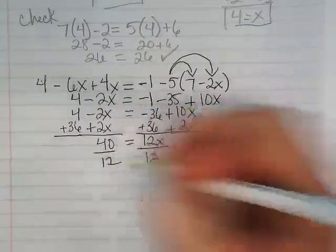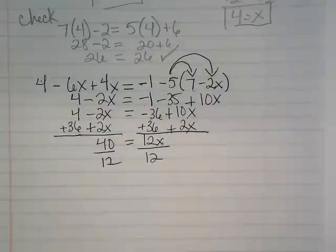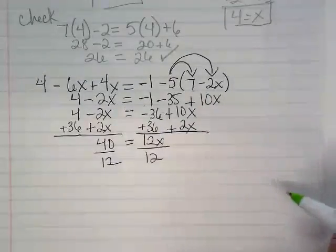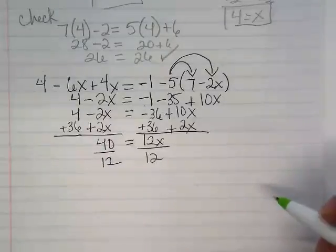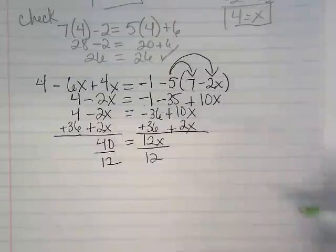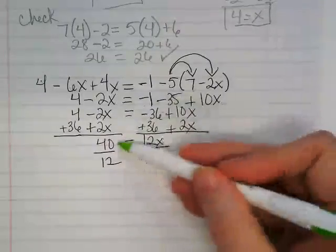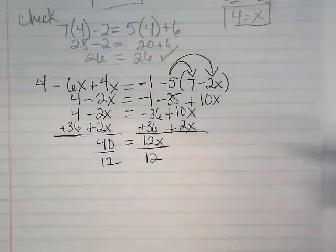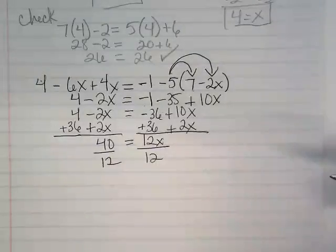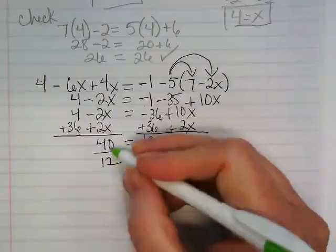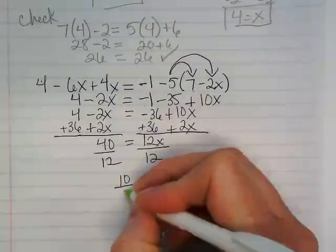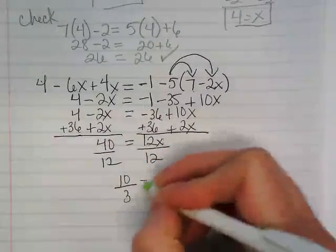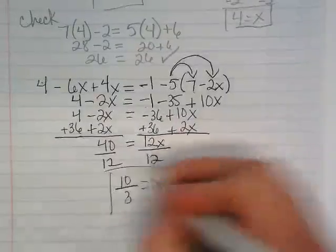This gets back to the question about our homework. 40 over 12 can be simplified. I'm going to divide, but I don't need to turn it into a mixed number. I'm just going to divide out what can be divided out. When I look at that, I'm like, well, they're both even. I could divide by 2. Is there anything larger? 40 divided by 4 is 10, 12 divided by 4 is 3, and there we go.